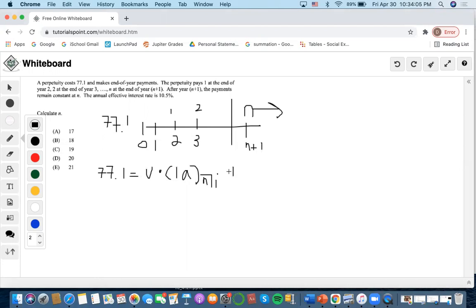The next part has payments of n discounted back by n+1. It's also a perpetuity.